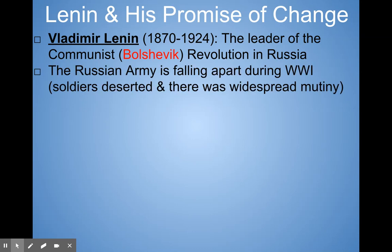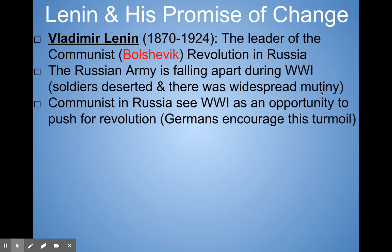The Russian army was falling apart during World War I. Soldiers deserted the front — they just left their positions. They said: how can we fight the Germans when we don't even have enough munitions, our leaders are idiots, and our families are starving back at home? If you leave the military without proper authorization, that's mutiny. Soldiers were deserting and there was widespread mutiny going against their leaders, and the army was falling apart.